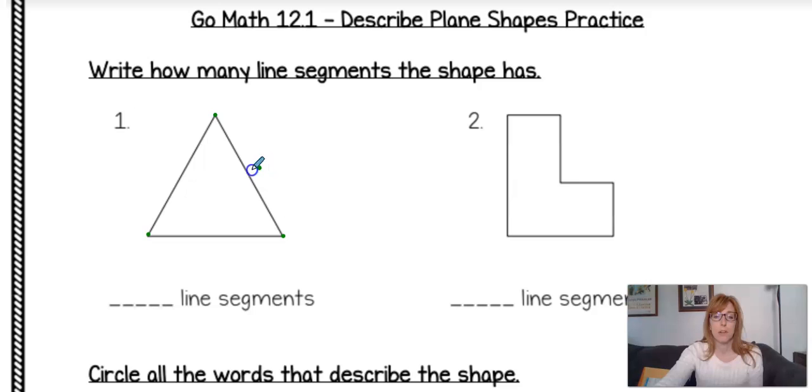So from here to here you have one, here to here you have two and from here to here you have three. So you should have three line segments.